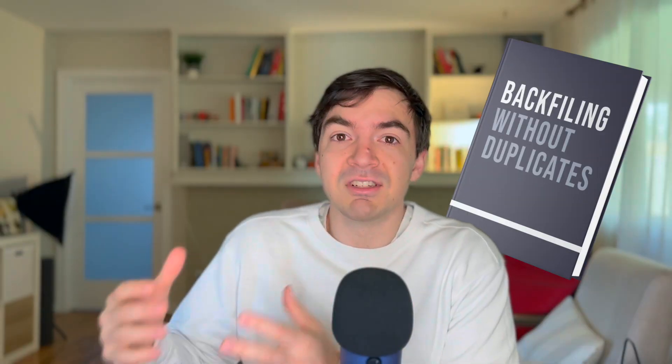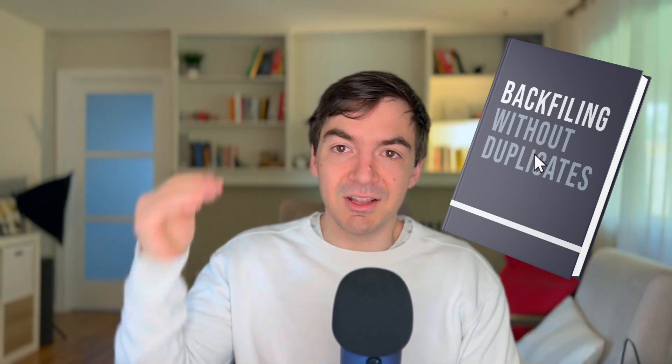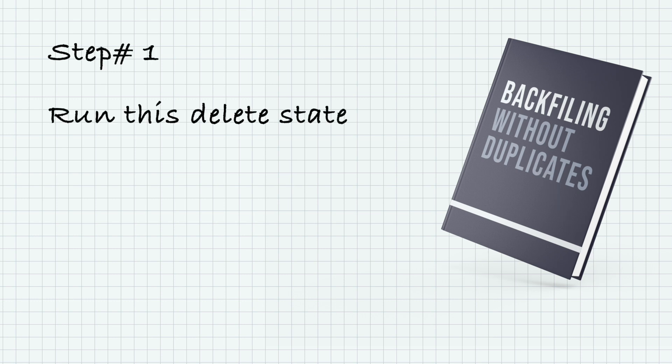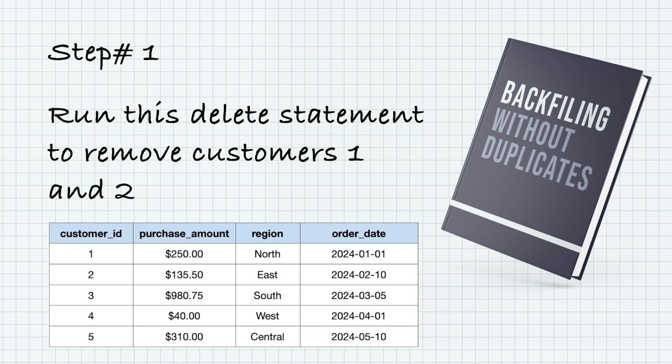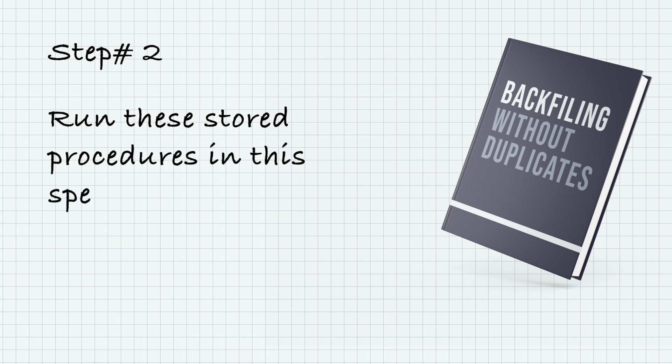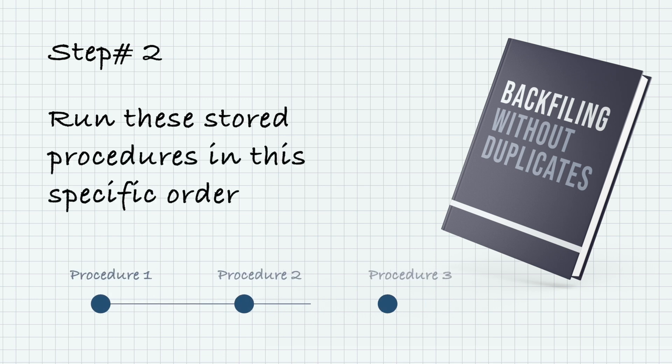This can be very tricky. I remember my very first job, we basically had to have a runbook saying here's how you backfill, because if we didn't, you'd create duplicate data. We'd have to say: step one, run this delete statement for whatever you're trying to delete — delete from this table for either a customer ID or date range. Then step two, run these stored procedures in this specific order to make sure you don't mess things up. So this is a very often painful process.